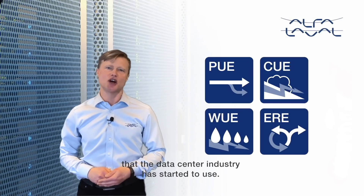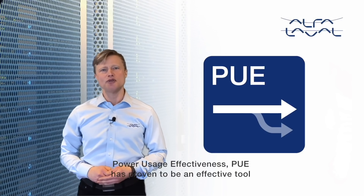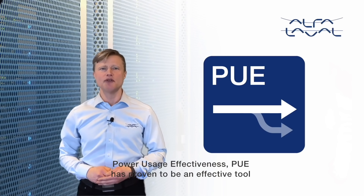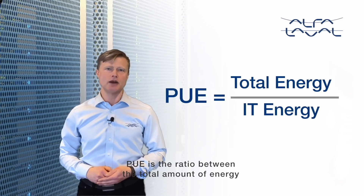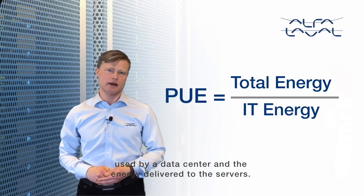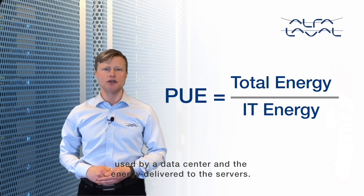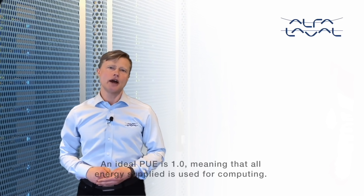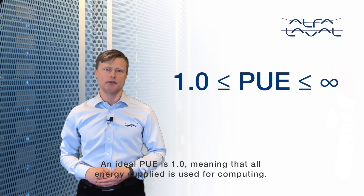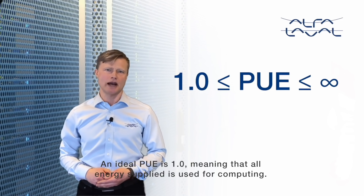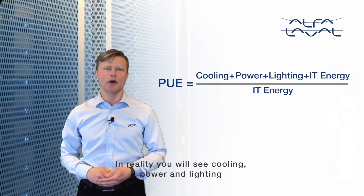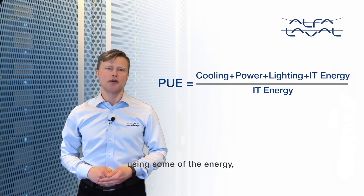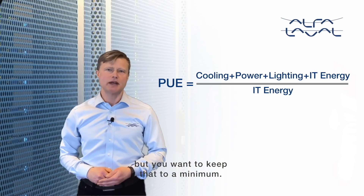Power Usage Effectiveness (PUE) has proven to be an effective tool for measuring data center energy efficiency. PUE is the ratio between the total amount of energy used by a data center and the energy delivered to the servers. An ideal PUE is 1.0, meaning that all energy supplied is used for computing. In reality, cooling, power, and lighting use some of the energy, but you want to keep that to a minimum.